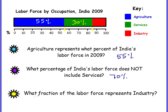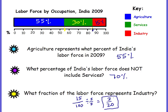What fraction of the labor force represents industry? Industry is the red, going from 85% to 100%, so that's 15%. Percent is out of 100, so the fraction is 15/100. You always have to simplify — divide both by 5 — and you get 3/20. So 3/20 is the fraction that represents industry.